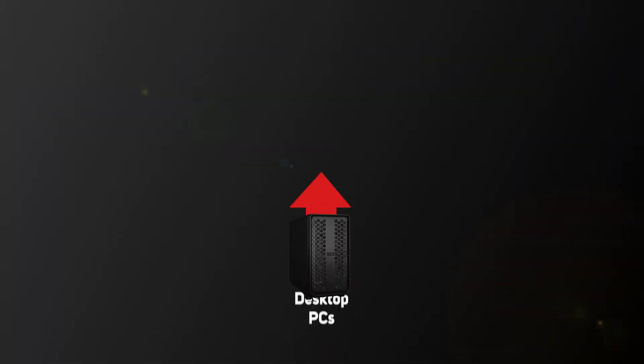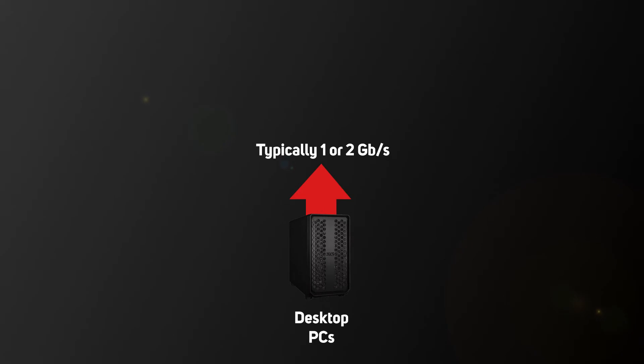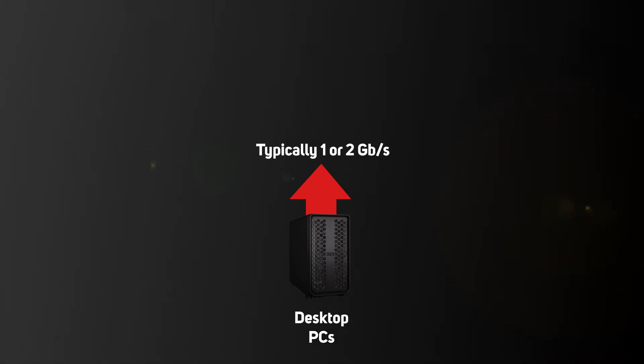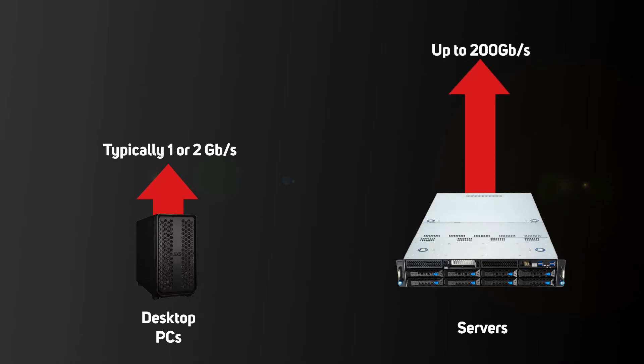The NICs or network cards in a server also have a critical role to play in enabling other devices on the network to communicate effectively with the server. Unlike desktop PCs and laptops, which often use low-speed wired connections such as one or two-and-a-half gigabit ethernet, or Wi-Fi, servers always use wired connections — because wired networks are faster, more reliable and more secure than Wi-Fi.